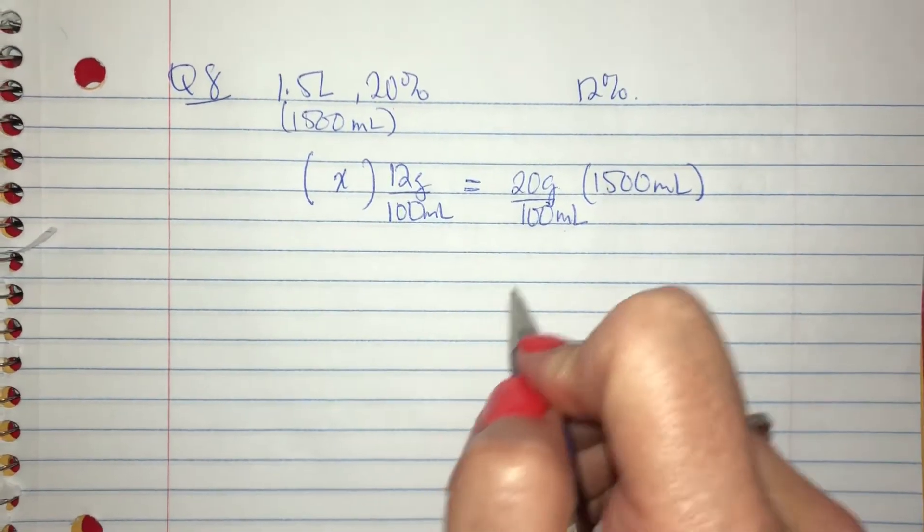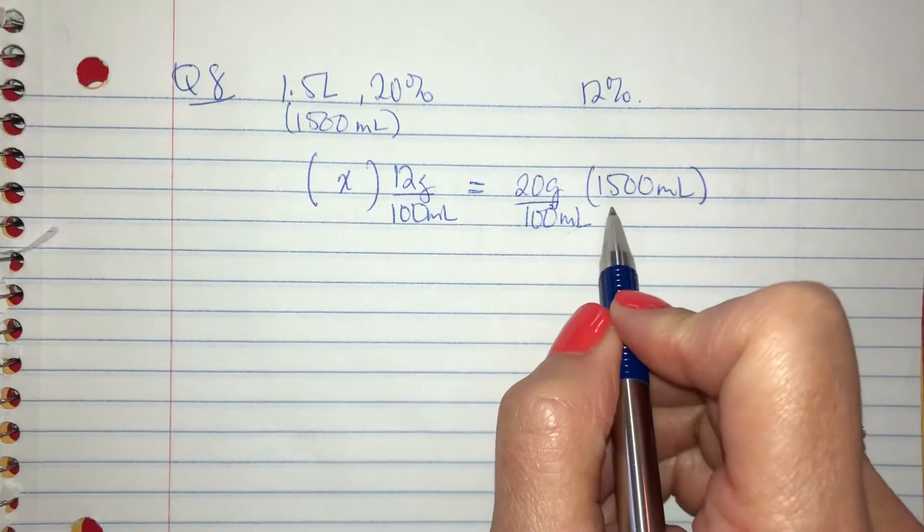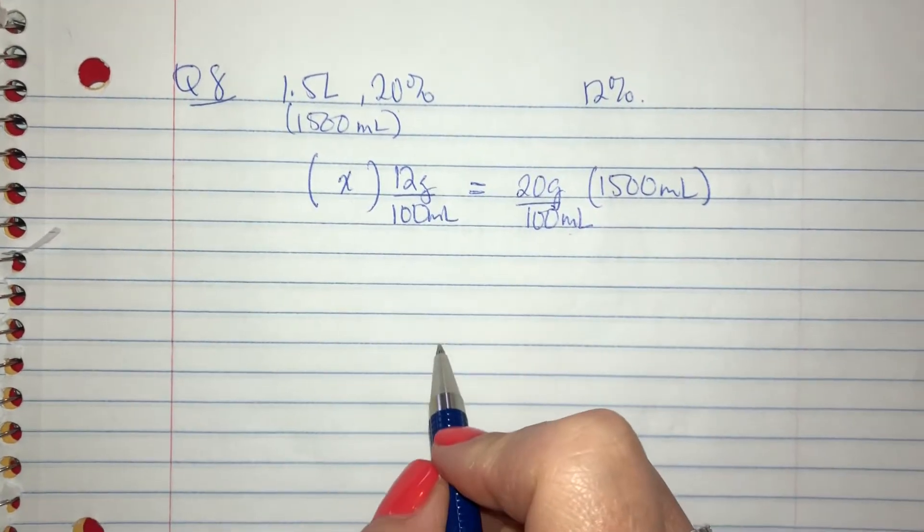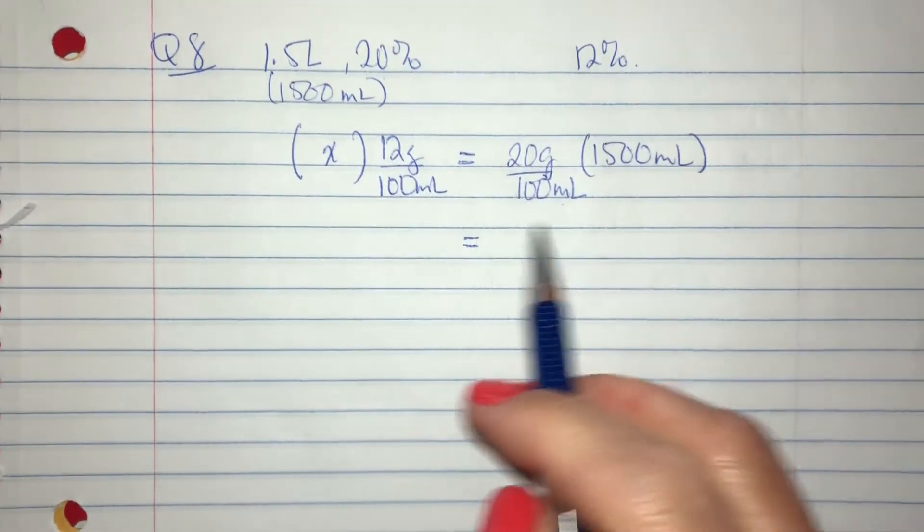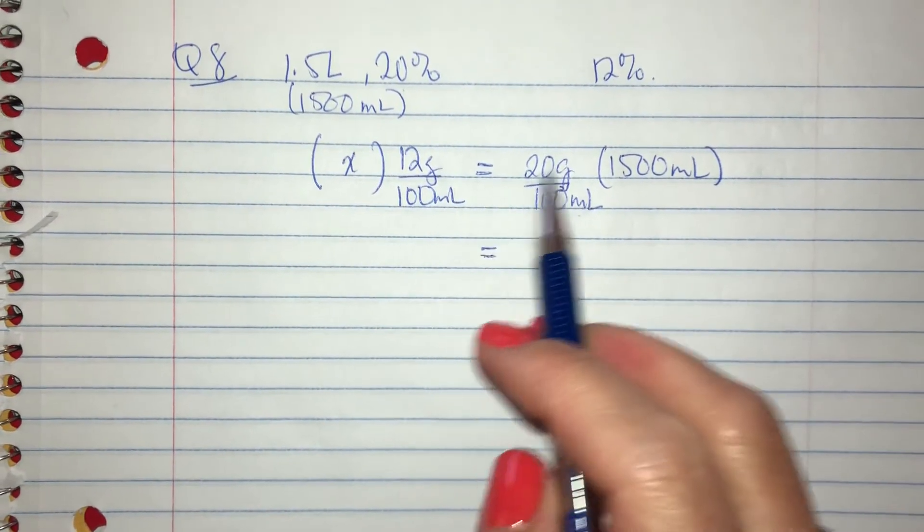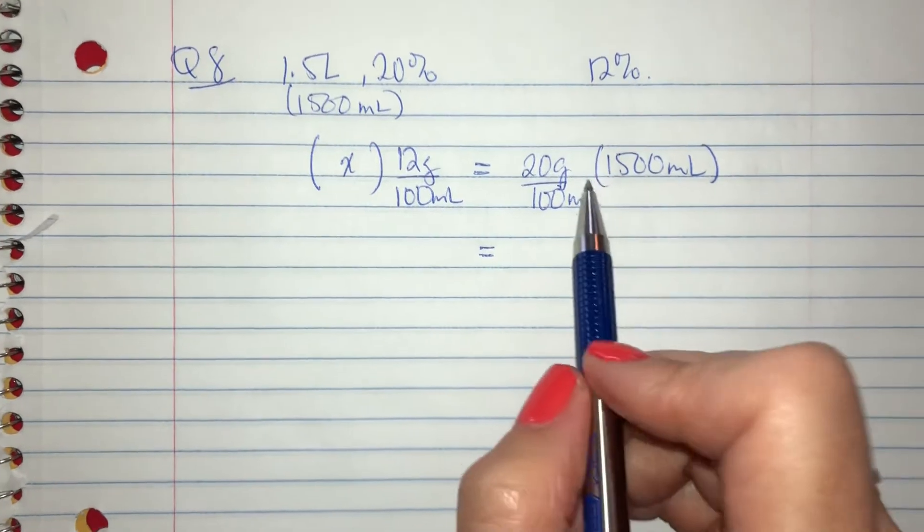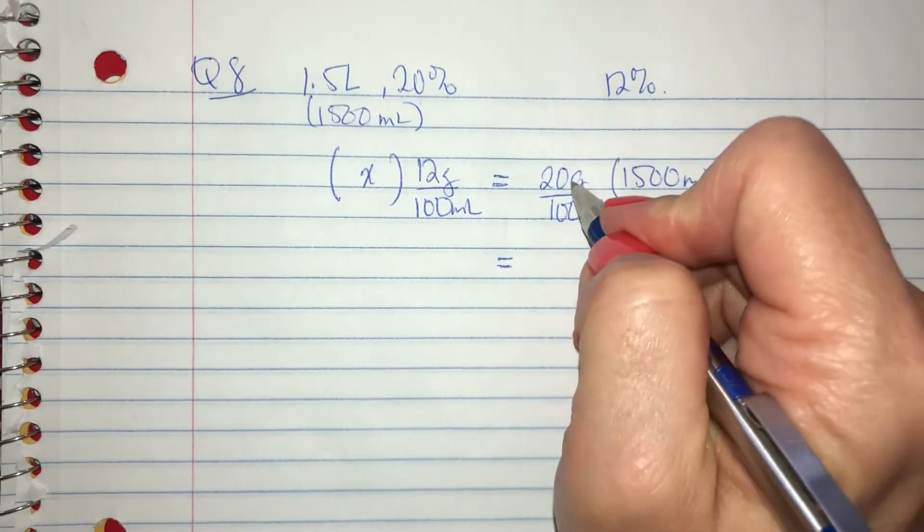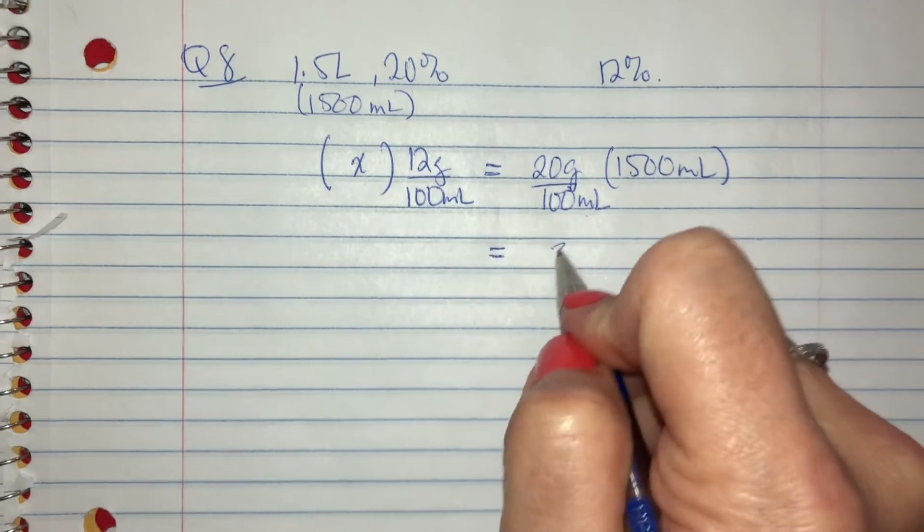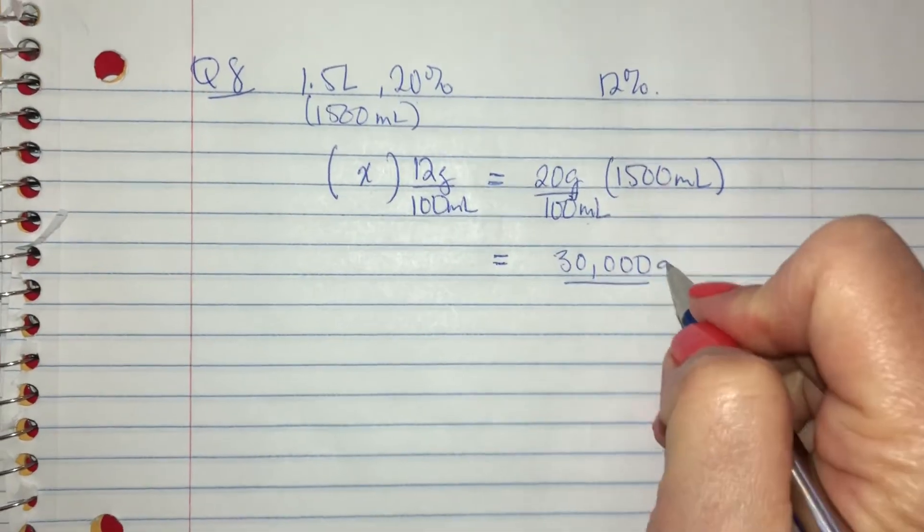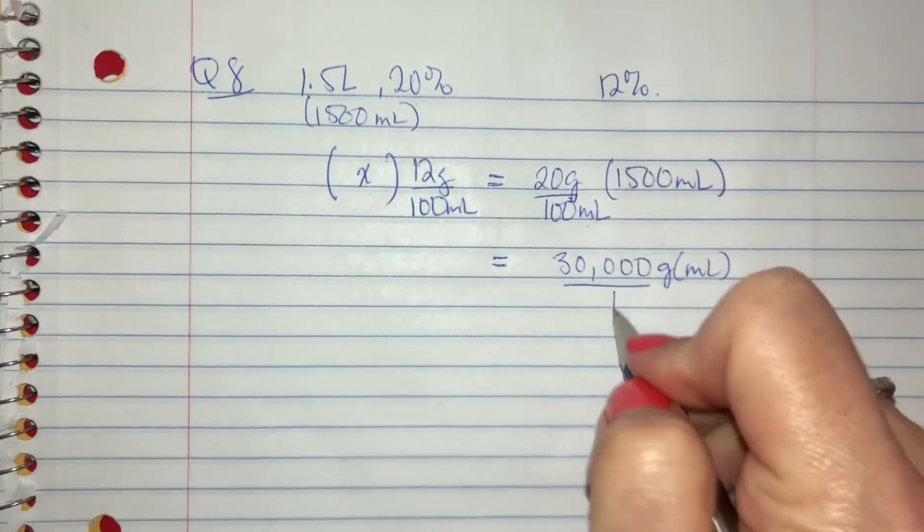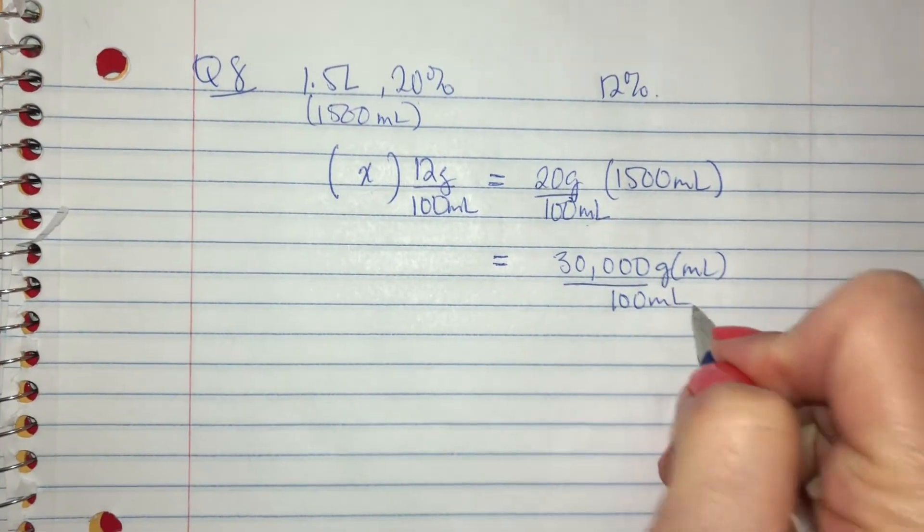What I can do is I can start solving for this side because I don't have enough information to really do much over here. So if I want to solve for this side and I don't want to do any extra conversions, then I'm going to say 20 times 1,500 is equal to 30,000. Right, and it's grams over mils over 100 mils. Okay.